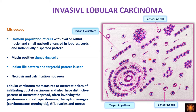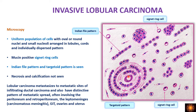Microscopically, lobular carcinoma shows a uniform population of cells — predominantly present as individually dispersed or in the Indian file pattern, a linear row of cells. This pattern is named after North Americans who used to walk in a single row one after the other. Another pattern is the targetoid pattern: a benign duct in the center surrounded by tumor cells arranged in a concentric fashion.